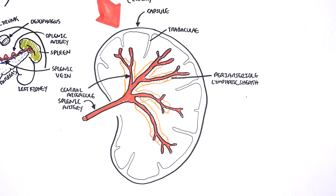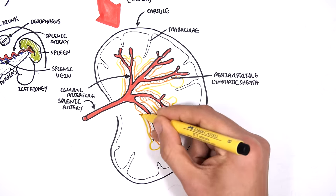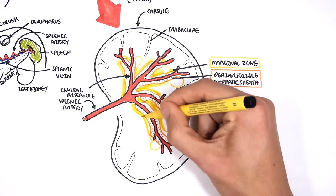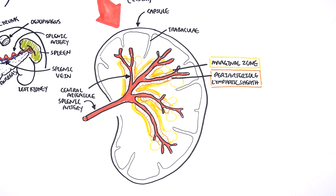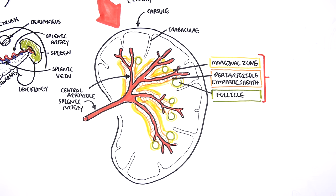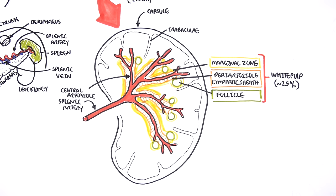The peri-arterial lymphatic sheath is a lymphoid organ containing immune cells, mainly T cells and macrophages. Surrounding it is another lymphoid tissue called the marginal zone, shown here in yellow, which is made up of predominantly macrophages. Within this lymphatic tissue are other lymphatic clusters called follicles, shown here in green. The follicles are surrounded by the marginal zone and contain B cells. The peri-arterial lymphatic sheath, the marginal zone, and the follicles make up the white pulp of the spleen, which constitutes 25% of the splenic tissue.